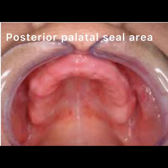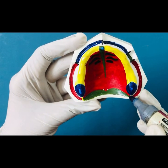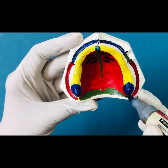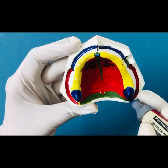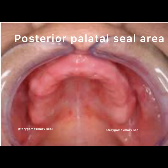The posterior palatal seal area is defined as the soft tissues along the junction of the hard and soft palate on which pressure within physiological limits can be applied by a complete denture to aid in its retention. It can be divided into two regions: the pterygomaxillary seal and the post palatal seal. The pterygomaxillary seal starts at the hamular notch and extends three to four millimeters anterolaterally into the mucogingival junction.